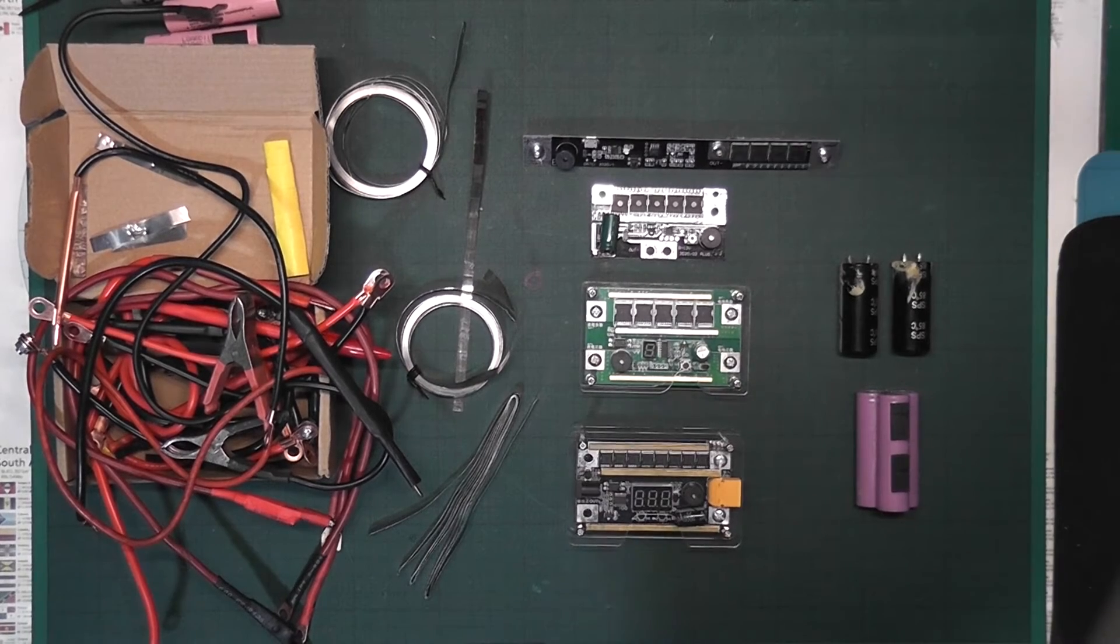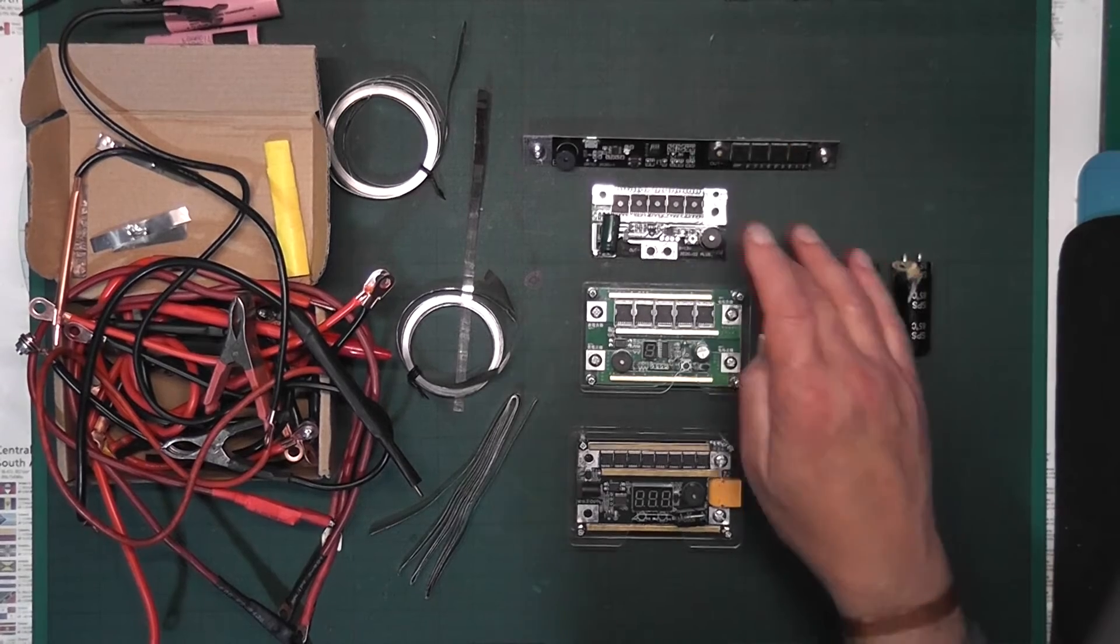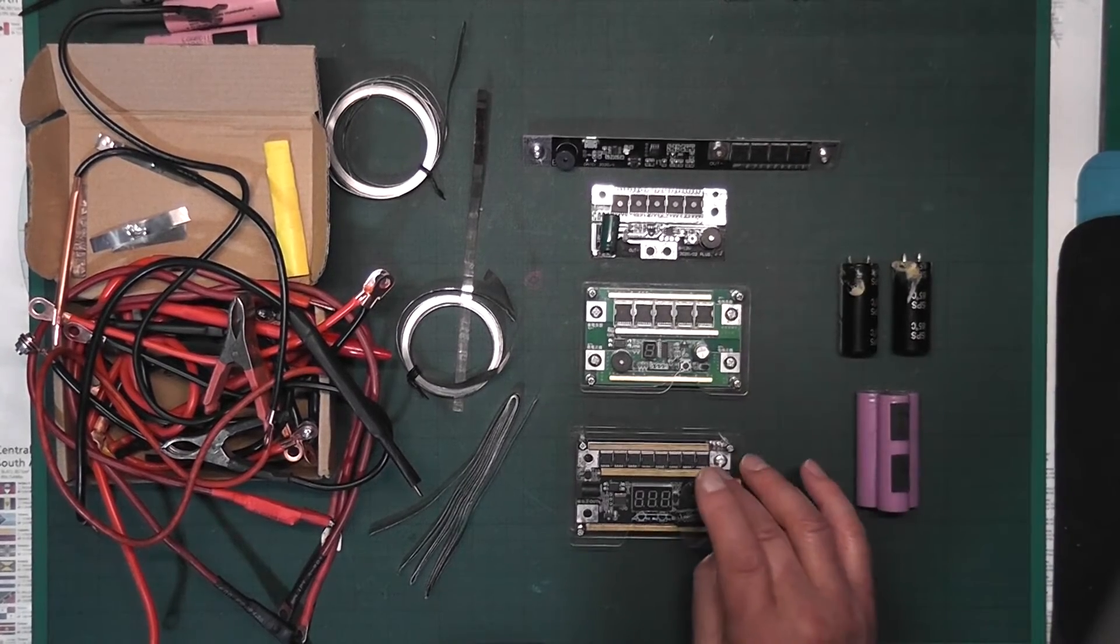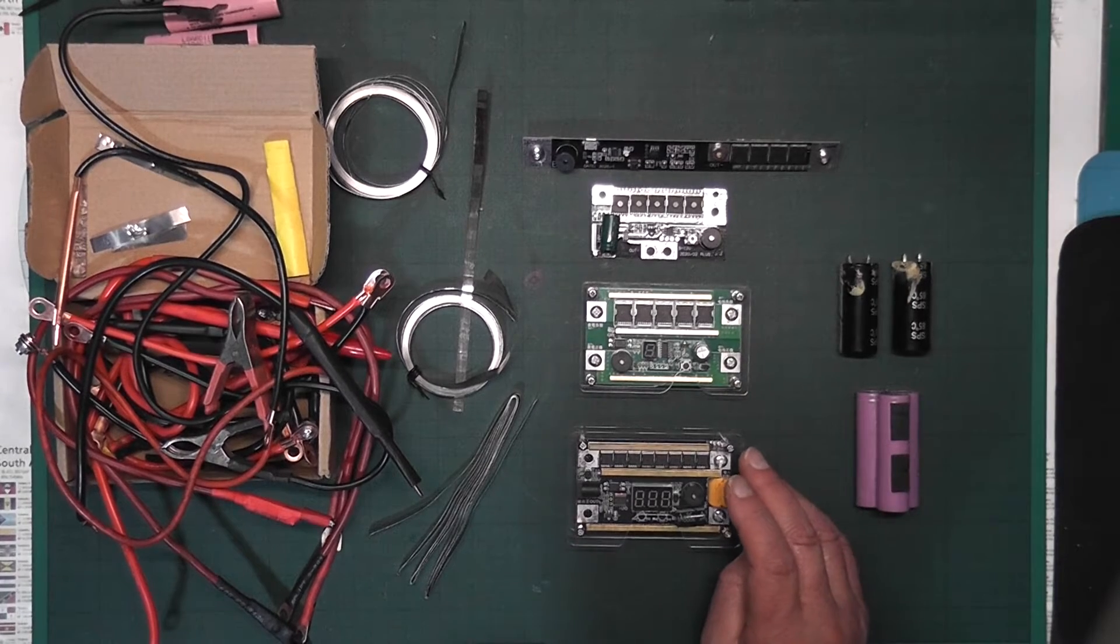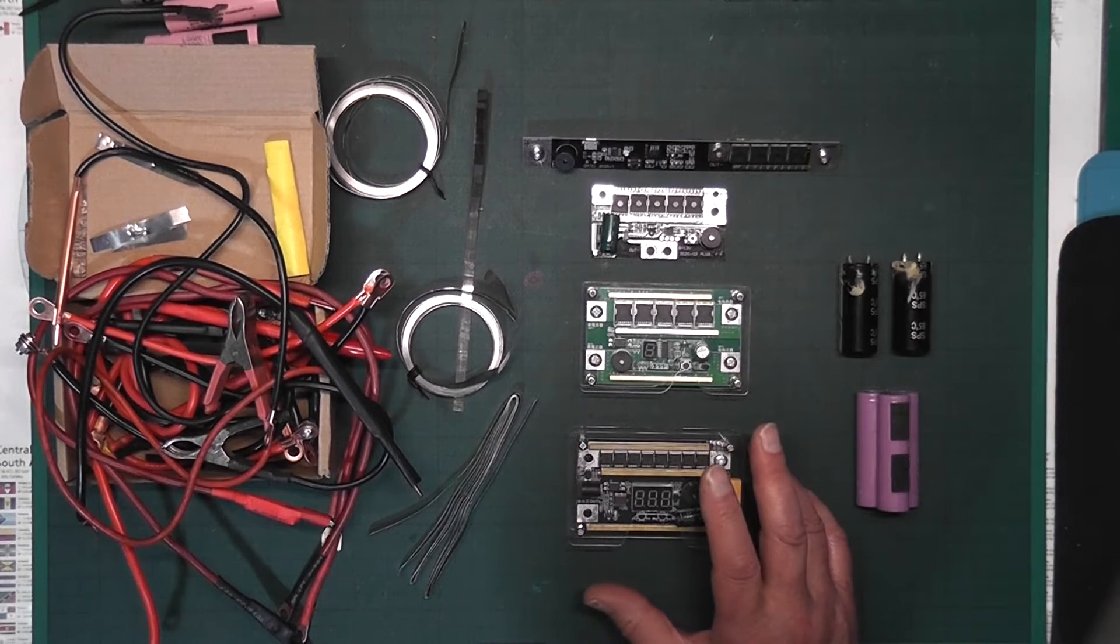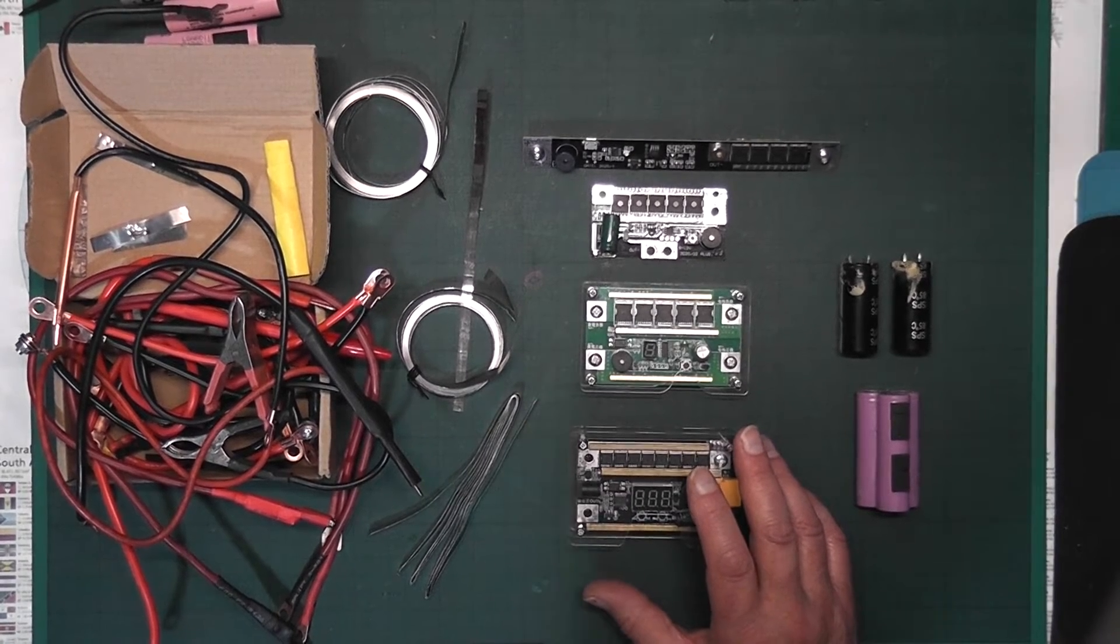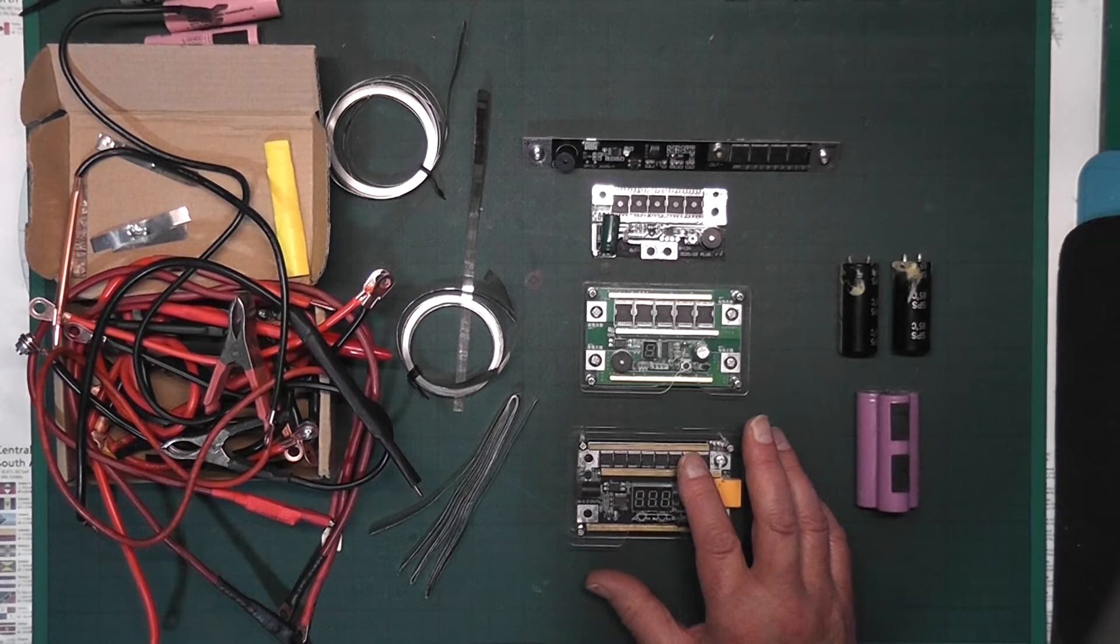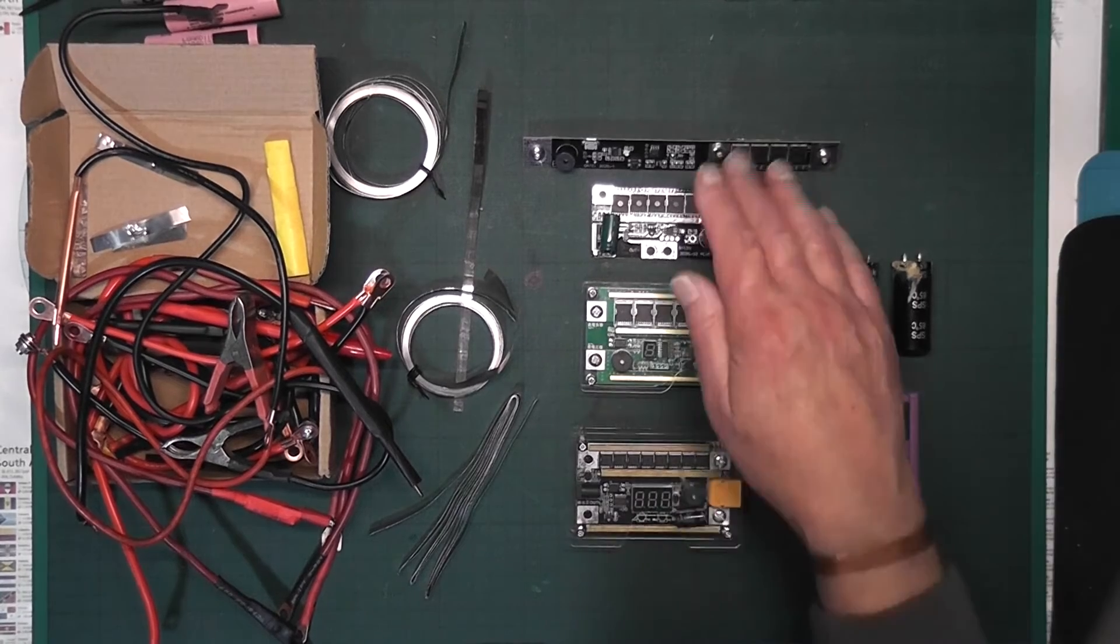Battery spot welders, most of them run off small batteries, car batteries, you can get them to run off lipo, you can get them to run off high power transformers and chargers, and they all do a bit of a job but they don't do a very good job.